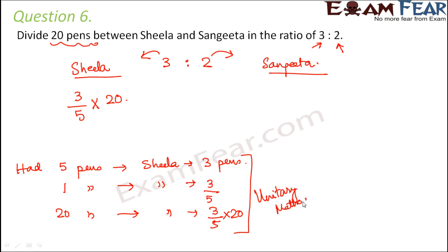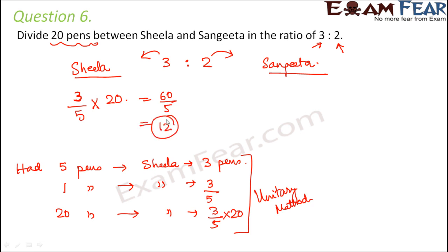We will discuss the unitary method in more detail slightly later. In this method, we find out the number of pens for 1 unit, then find the value for the required number of units. So whenever the ratio is given, you take the ratio corresponding to Sheila, which is 3, divided by the sum of the ratios, that is 5, multiplied by the total number, which is 20. This becomes 60 divided by 5, which equals 12. So Sheila will get 12 pens.